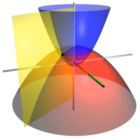Another common coordinate system for the plane is the polar coordinate system. A point is chosen as the pole and a ray from this point is taken as the polar axis. For a given angle θ, there is a single line through the pole whose angle with the polar axis is θ, measured counterclockwise from the axis to the line. Then there is a unique point on this line whose signed distance from the origin is r, for a given number r. For a given pair of coordinates there is a single point, but any point is represented by many pairs of coordinates. For example, (r, θ), (r, θ + 2π) are all polar coordinates for the same point. The pole is represented by (0, θ) for any value of θ.